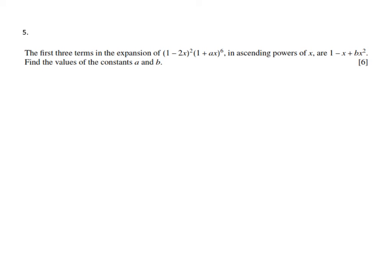So what's going on? It says that the first three terms in the expansion of (1-2x)² times (1+ax) to the power 6 in ascending order of x are 1 minus x plus bx². We have to find the values of the constants a and b.